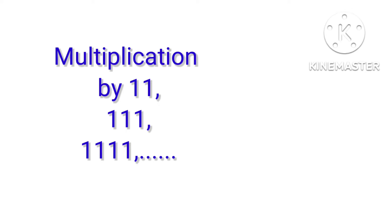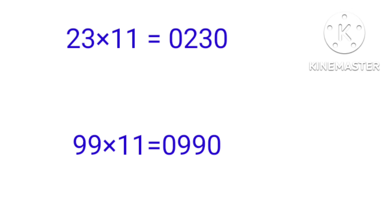Trick number 3: multiplication by 11, 111, 1111, and so on. For 23 into 11: we write some zeros on the left side and right side of the number. We need to find the number of zeros — 11 is a two-digit number.